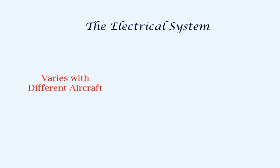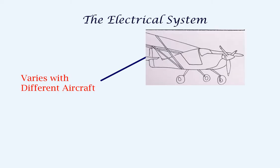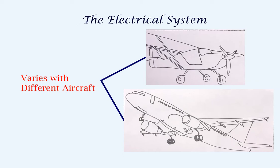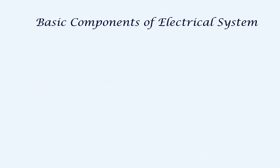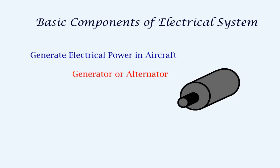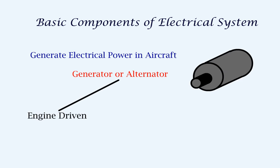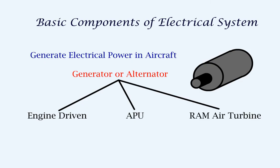The electrical system varies with different aircraft, so we will consider a small piston engine aircraft and a multi-engine jet aircraft for our discussion. First, let's look at the components of the electrical system. We need something that can generate electrical power in the aircraft. This can be done by a generator or an alternator. These generators are driven by the engine, the APU, or a ram air turbine.